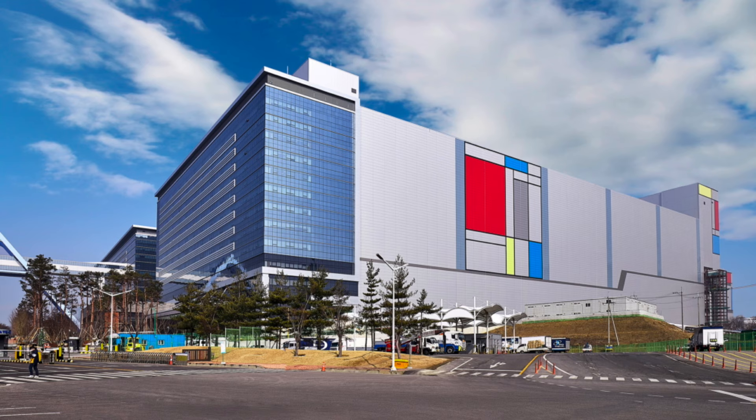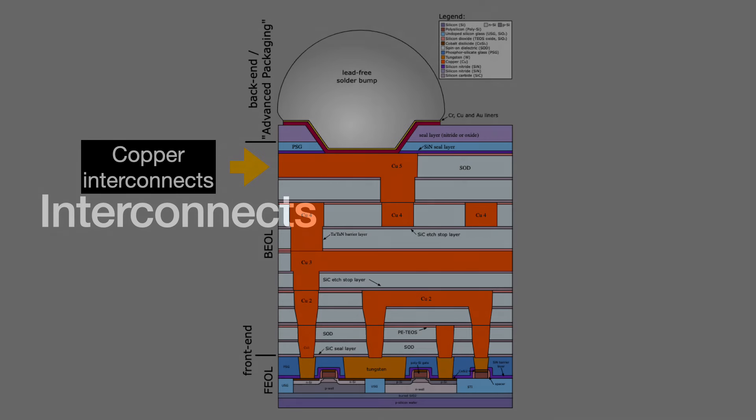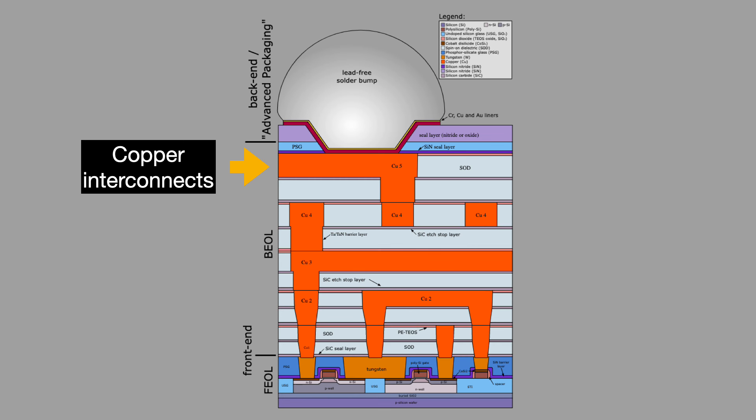IC makers have also adopted ALD into another significant portion of the semiconductor manufacturing process: back-end of the line processes, or BEOL. These complement the front-end of the line, or FEOL. In front-end, you create the transistor structures. In back-end, you connect those transistors together with metal interconnects.